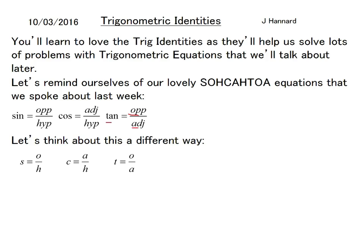Let's for a laugh divide s by c, so you end up with s over c equals o over h divided by a over h. But how do you divide by fractions? Well, you roll them over and times them, well the second one at least. So you end up with o over h times h over a.